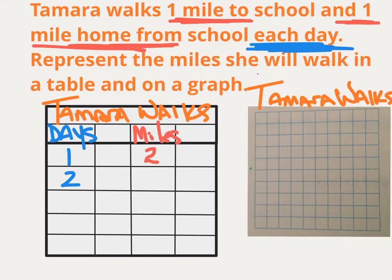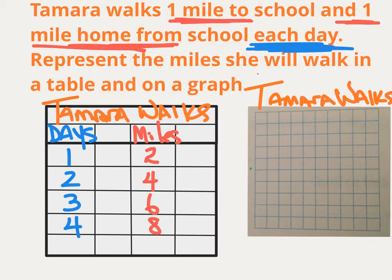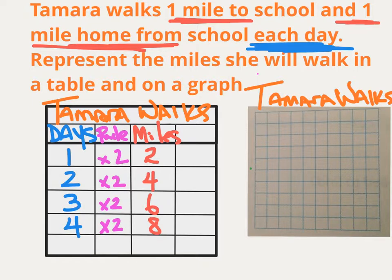On the second day, Tuesday, she walks two more miles for a total of four. The third day, another two for a total of six. The fourth day, another two for a total of eight. What's happening to my input data to generate my output data? That's my rule — it looks like I'm multiplying by two. Each day she's walking two miles, so I multiply the number of the day by two to get the total miles walked. By the end of Friday, the fifth day, multiplying by two gives us 10 miles walked that entire week.